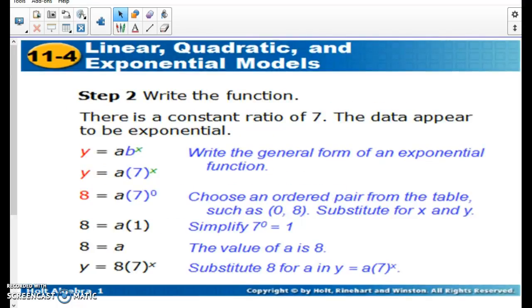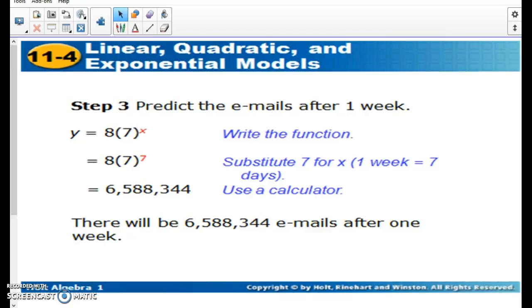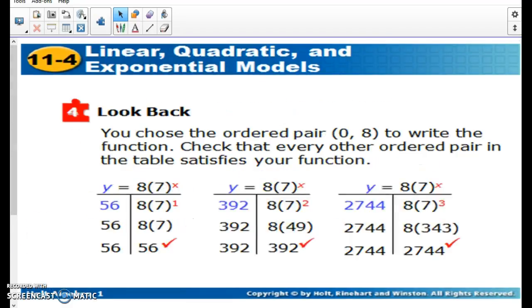And then once we kind of figure out that my equation is going to be, you know, a is our 8, 7 is our pattern, and we want to know after one week, so the time is seven days. So everybody that got the email shared it seven times. By the end of that week, when it starts, we would have about six and a half million emails shared using the exponential growth formula.